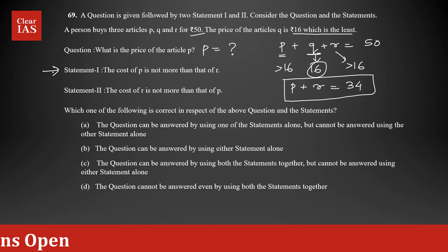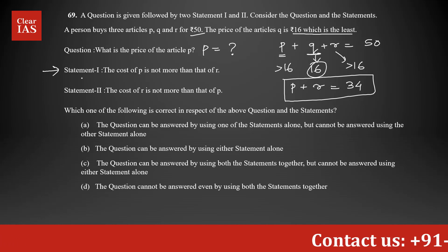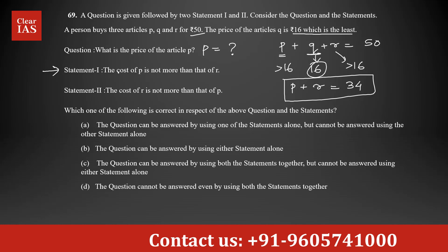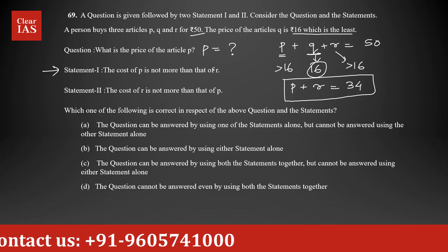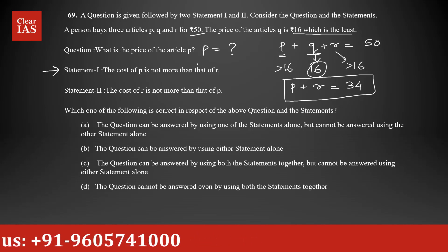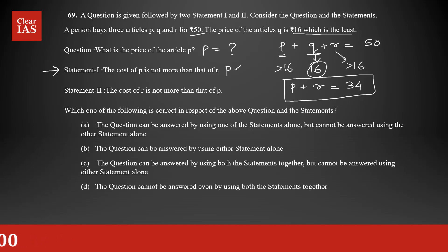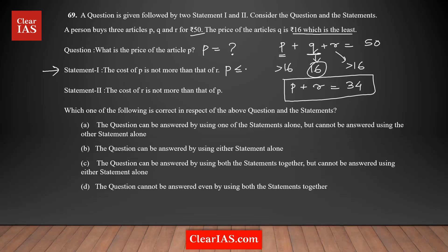You could start with either statement 1 or 2 — it's your choice. So, what does statement 1 say? The cost of P is not more than that of R. That means P is less than or equal to R. This is the condition we have: P has to be less than or equal to R.